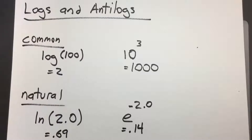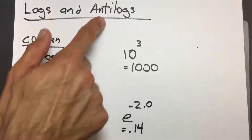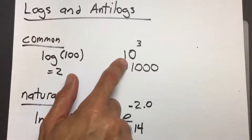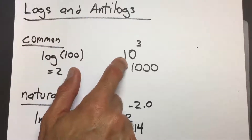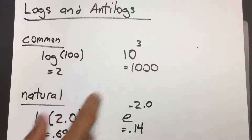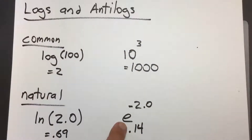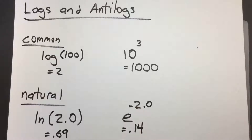I'm also going to show you the antilogs that go with them. The common antilog is represented by 10 raised to some number, and the natural antilog is represented with a lowercase e raised to some number. Don't confuse this with the uppercase e — it's a completely different thing. I'm going to show you the difference on all six of our different calculators.